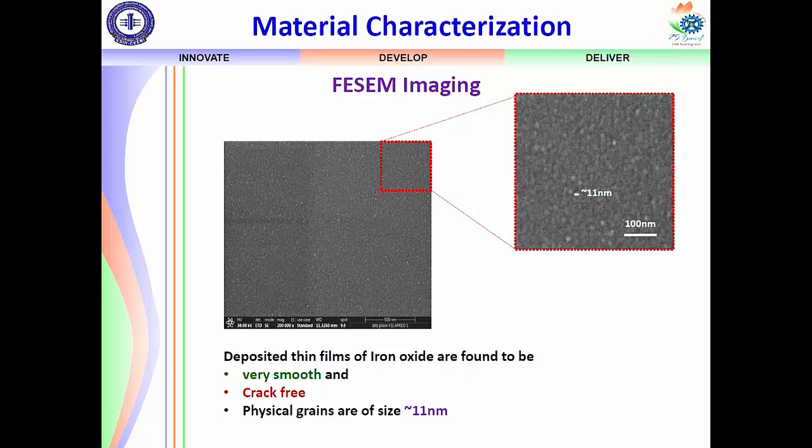Here you can see the grain size is very small — around 11 nanometers. Going deeper into the physics, the grain size should be comparable to the electron Debye length of the material. Since the grain size is very small, the grain boundaries are very high, and this material should therefore be very sensitive towards gas sensing.